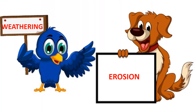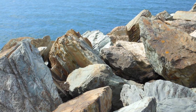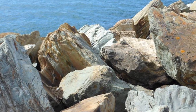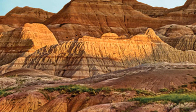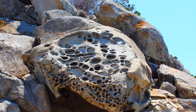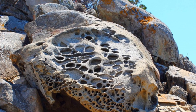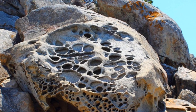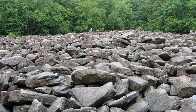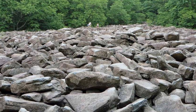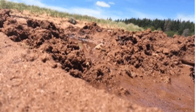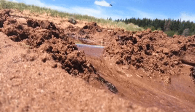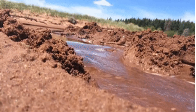Weathering and erosion are important parts of the rock cycle. Weathering is one of the forces on Earth that destroy rocks and landforms. Weathering is the process where rocks are dissolved, worn away, or broken down into smaller and smaller pieces. Erosion happens when rocks and soil are picked up and moved to another place by ice, water, wind, or gravity.